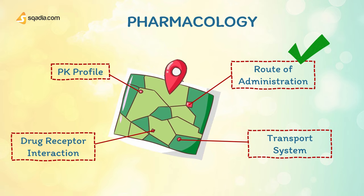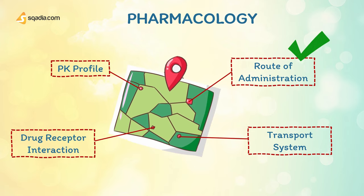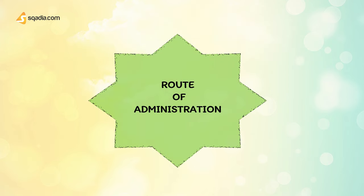So let's begin the topic and learn about different routes of drugs, along with their advantages and disadvantages. The route of administration is determined by the properties of the drug — for example, water or lipid solubility, ionization — and by the therapeutic objectives, for example, the desirability of a rapid onset, the need for long-term treatment, or restriction of delivery to a local site.